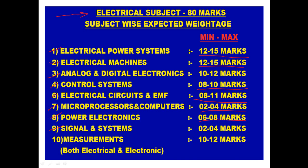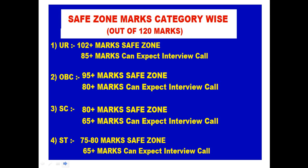Power Electronics: 6 to 8 marks. Signals and Systems: 2 to 4 marks. Electrical and Electronic Measurements: 10 to 12 marks.